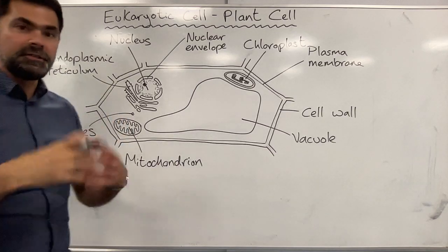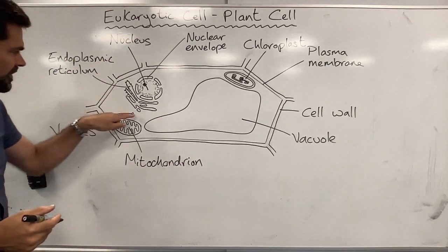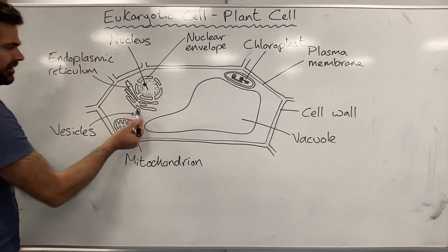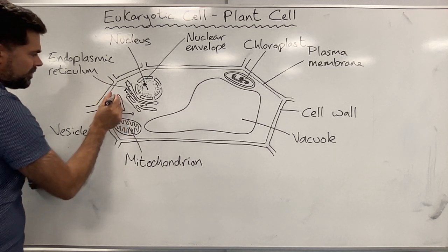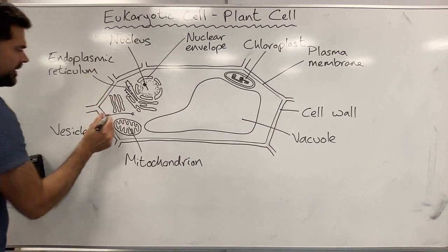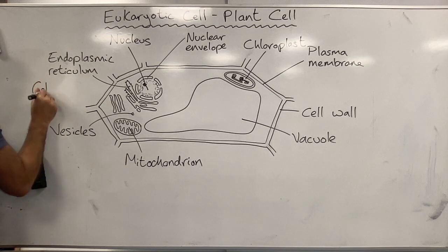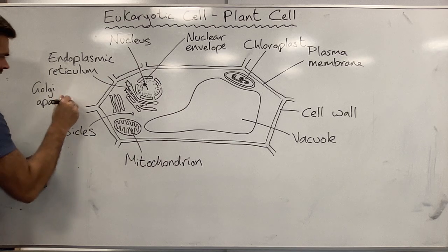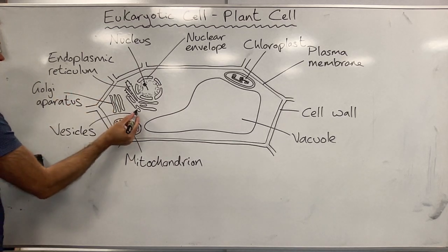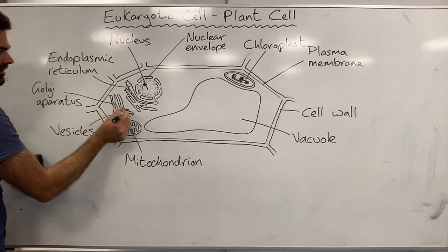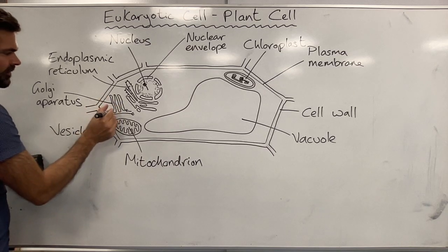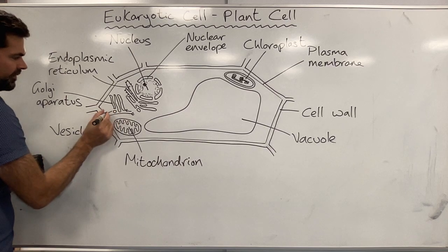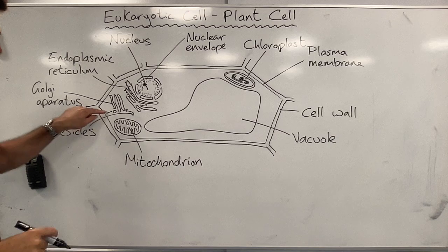In a cell that secretes a protein like a hormone or enzyme, you might see hundreds of these little vesicles containing the enzyme produced in the endoplasmic reticulum. They move through the cell, and some will move to another organelle that looks quite a lot like the endoplasmic reticulum, but where the flattened sacs are not connected to each other — that's the Golgi apparatus. A vesicle can move and join with the Golgi apparatus where the proteins inside can be changed and modified, and then vesicles can bud off, fuse with the plasma membrane, and the contents are secreted into the environment.